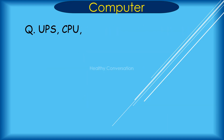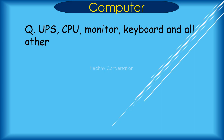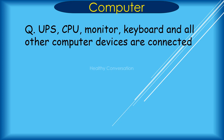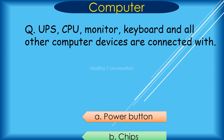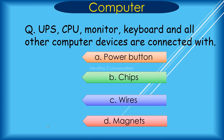Question: UPS, CPU, Monitor, Keyboard and all other computer devices are connected with A. Power button, B. Chips, C. Wires, D. Magnets. Correct answer is C. Wires.